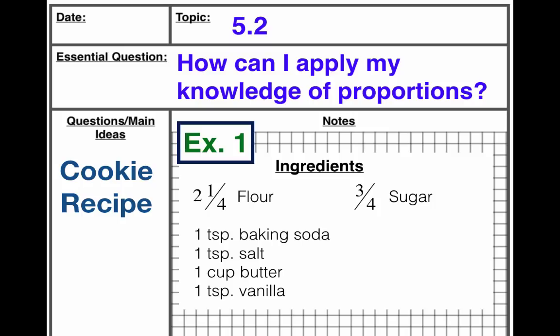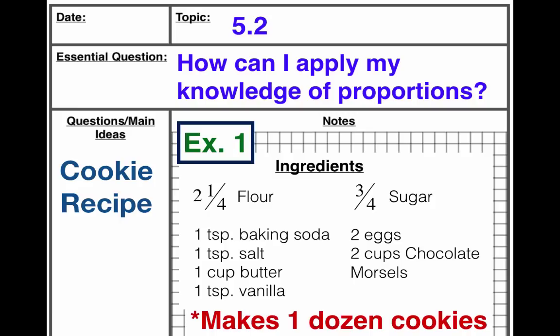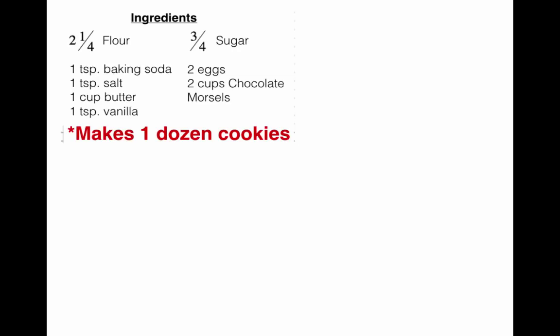We also need one teaspoon of baking soda, one teaspoon of salt, one cup of butter — that's what makes it taste so good — one teaspoon of vanilla for flavor, two eggs, and two cups of chocolate morsels, of course. If you need to pause the video to write all that down, go for it. This is our ingredients list, and these ingredients make exactly one dozen cookies — the recipe is for making a dozen cookies.